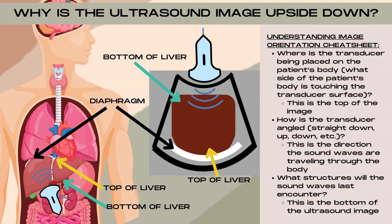If we were directing the sound waves directly perpendicular into the patient's body, we'd see the spine and the posterior portion of the patient's body at the bottom of the image. But in this case, since we're directing the sound waves upward, the bottom portion of the image is going to be the top portion of the liver and the diaphragm right above the liver.